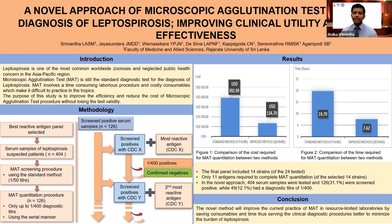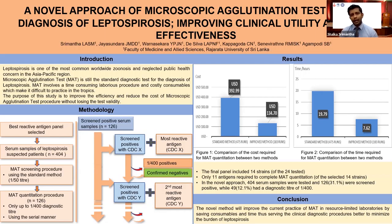First, we optimized the leptospira antigen panel using the WHO-recommended panel and four Sri Lankan isolates. We tested a large collection of serum samples from leptospira suspected cases from Teaching Hospital Anuradhapura, Peradeniya, Ratnapura, and Bayes Hospital Amissaridha. Then we selected the best antigen panel representing serogroups and the local isolate sector, and 404 serum samples were tested for MAT screening and MAT quantitation using the new scheme.